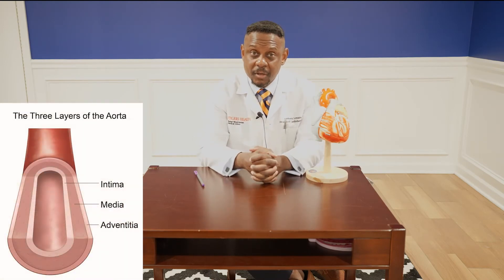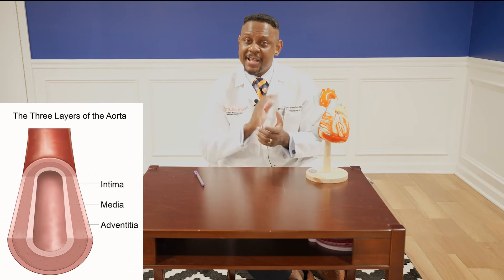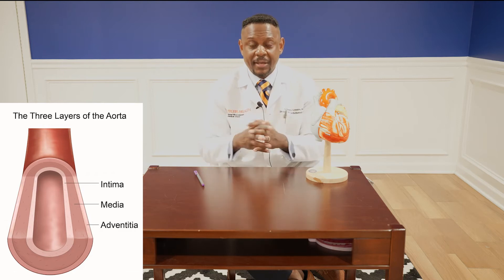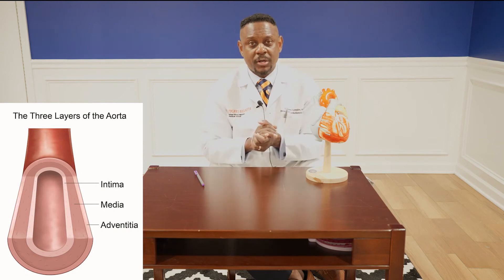The aorta is defined by three layers. There is an intima, which is the innermost layer of the aorta — the layer actually in direct contact with blood, with a smooth surface. There's a medial layer that contains muscle fibers, allowing the aorta to expand and contract with each heartbeat. The outermost layer is referred to as the adventitia — that's the strength layer. When someone has a dissection, that refers to a tear in the innermost layer, the intima, which allows blood to go between the layers of the wall, weakening the aorta and potentially causing rupture.